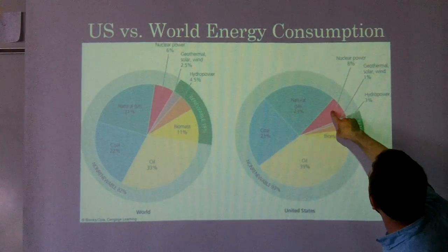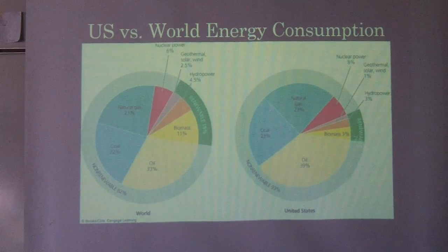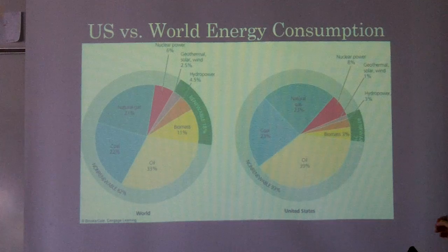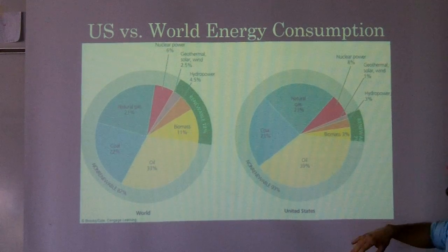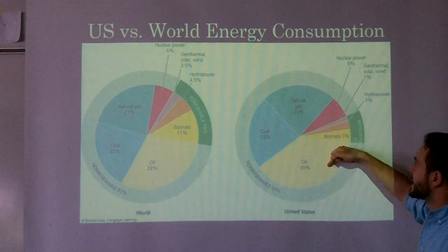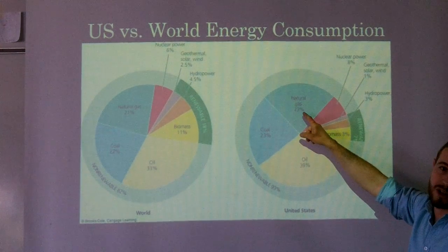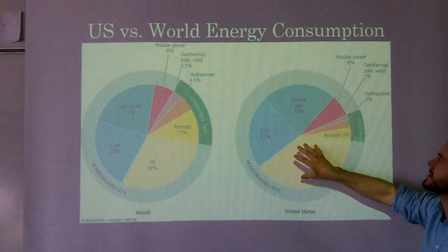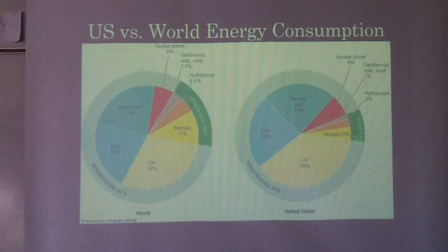8% of U.S. energy comes from nuclear power, which means we're actually getting more from nuclear power than from renewables — so this is a small market with lots of room to grow. 39% comes from oil, but this number will be dropping dramatically as natural gas skyrockets due to hydraulic fracking, which we'll discuss in this unit.